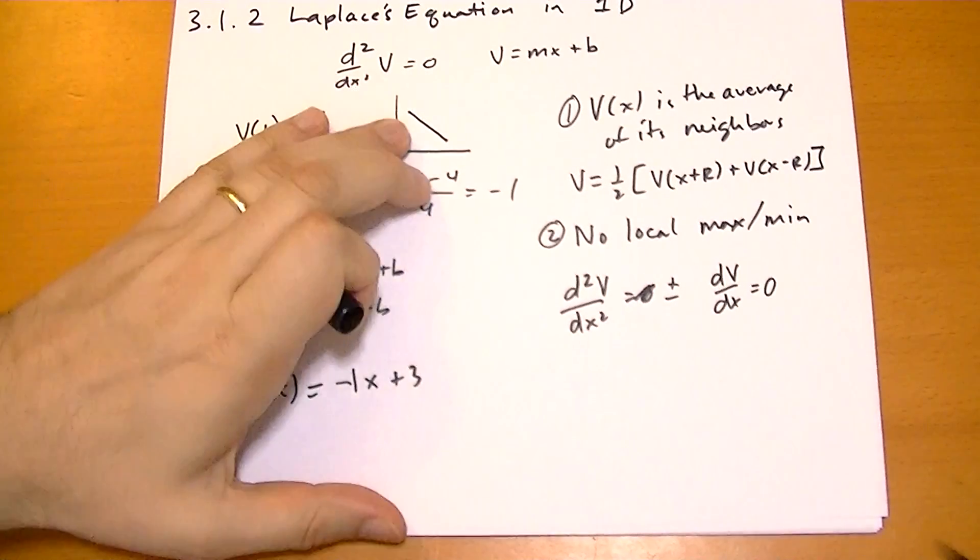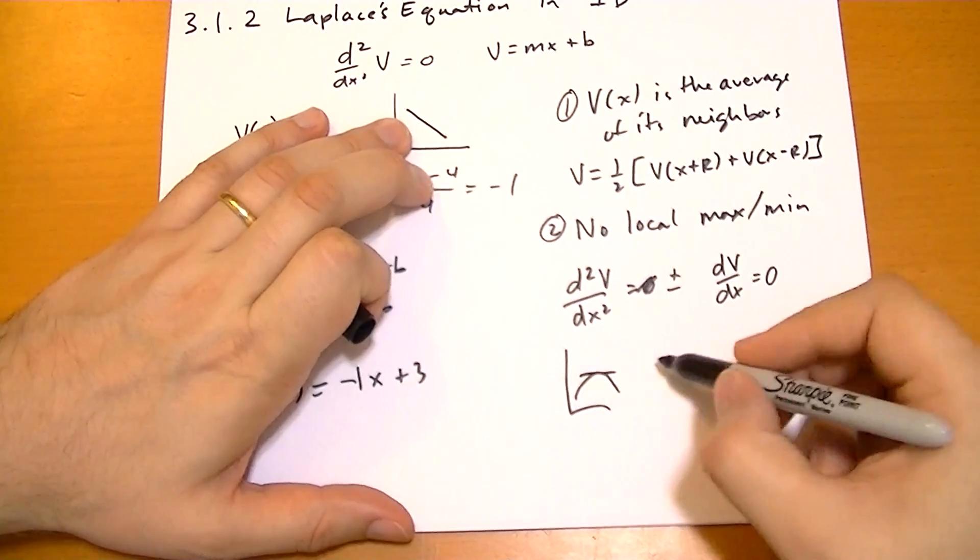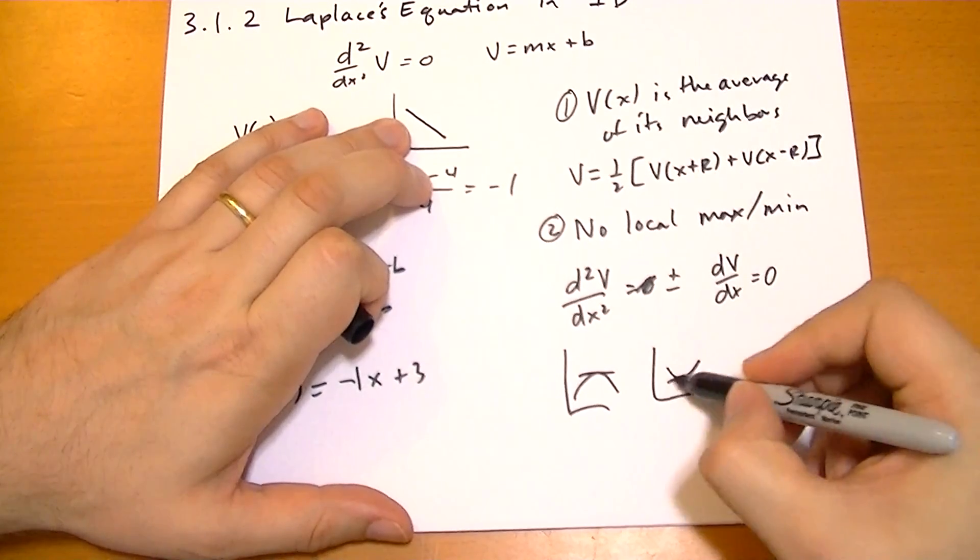So the slope is 0. And what that represents is either you have a case where it's cresting at the top or you have a case where it's like a valley, right? In that case, the slope is 0.